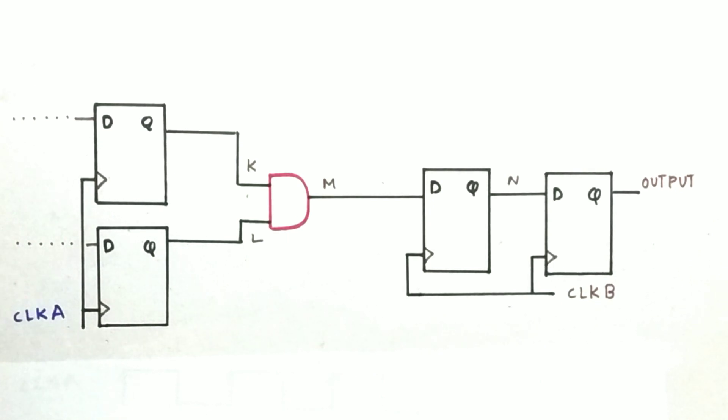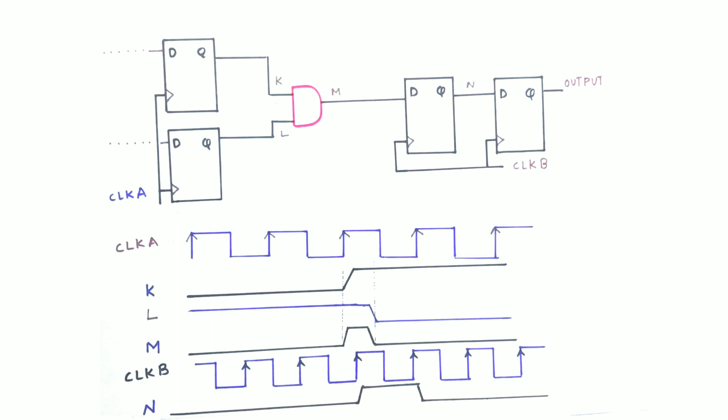So we have the output of this flop and this flop as K and L and being ANDed and given to M, and this output is the input for this flop which is driven by clock B. So clock A and clock B might have different frequencies and time period. So let's see a case where this will cause a glitch in the design.